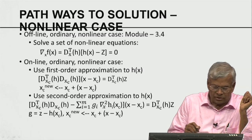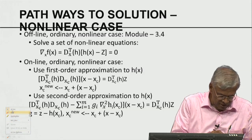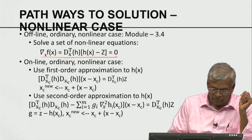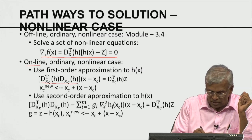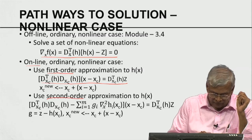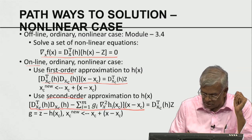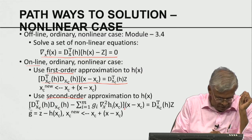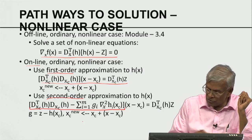For the offline ordinary non-linear case, we have to solve a set of non-linear equations by setting the gradient equal to zero. In the online ordinary non-linear case, we are again solving similar kinds of equations. In the second order case, we are solving systems where the system matrix is a large matrix, and we have to solve this linear system.